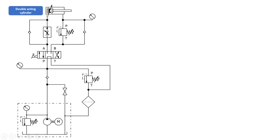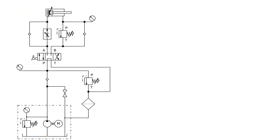This is a double acting cylinder — fluid is allowed to act on both sides of the piston, on the left-hand side as well as the right side. Now let us animate this particular circuit and try to understand with the help of simple animation how we can trace it.